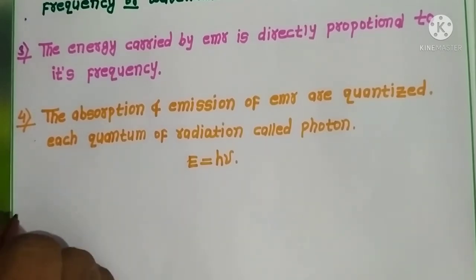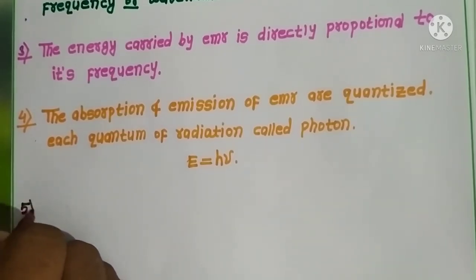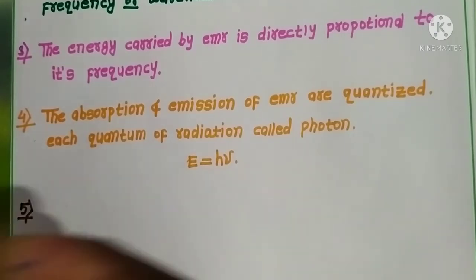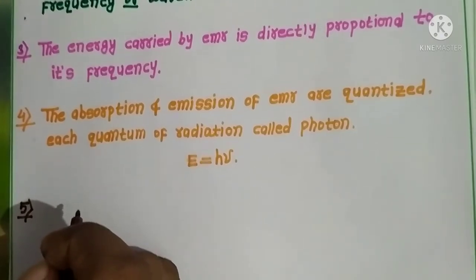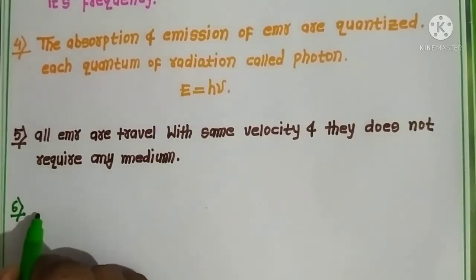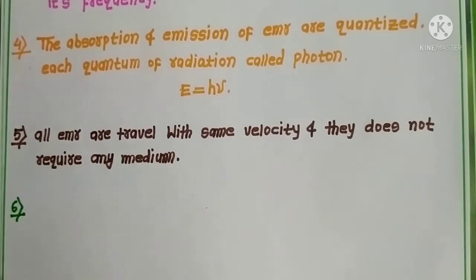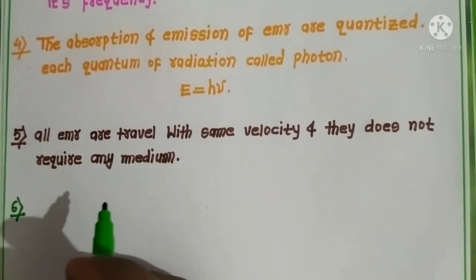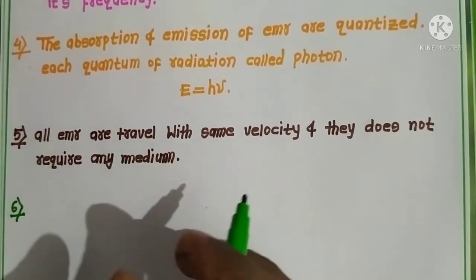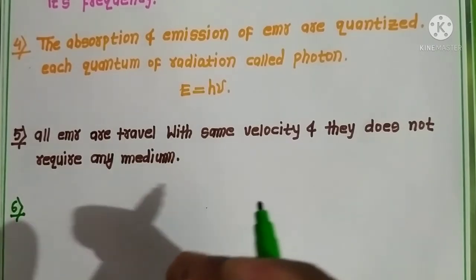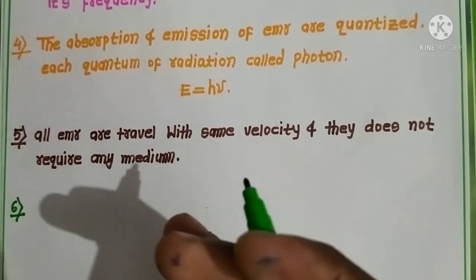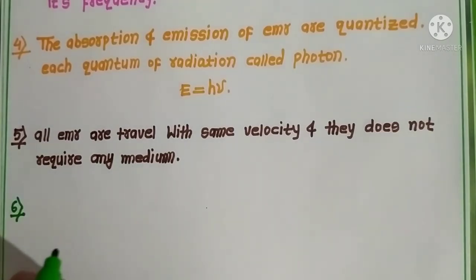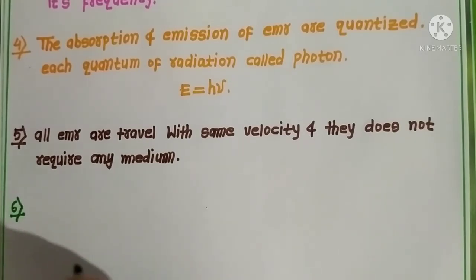The fifth characteristic is that all electromagnetic radiation travel with the same velocity and do not require any medium for their propagation. The sixth characteristic is that when white light passes through a prism, it splits into seven constituent colors — violet, indigo, green, yellow, orange, and red. This splitting of white light into different colors is called dispersion of light.